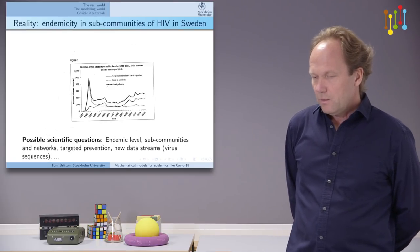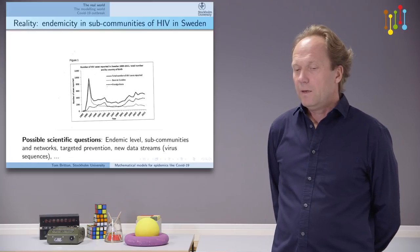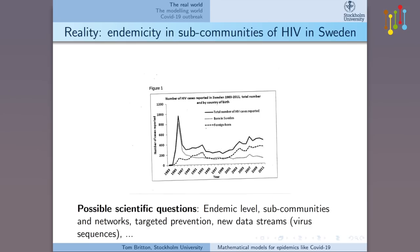Here is a graph for HIV in Sweden, from the start of the epidemic in the early 1980s. We see there was a big peak then, whereas now it seems to stabilize — perhaps slightly increasing. Questions asked for HIV include: is it growing or declining within risk groups? What preventive measures are effective? And in terms of data, can we collect viral sequences to learn more about spreading mechanisms?